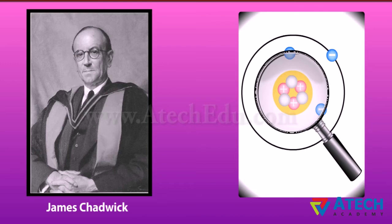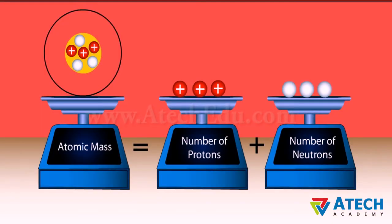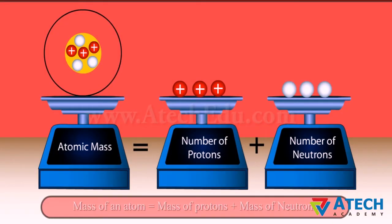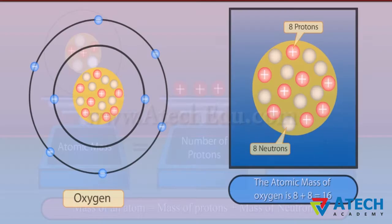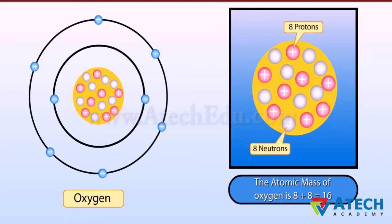The mass of an atom is given by the sum of the masses of protons and neutrons present in the nucleus. For example, oxygen has an atomic mass of 16 — the number of protons is 8 and the number of neutrons is 8.